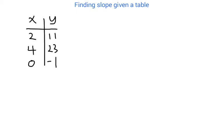By the way, ordered pairs, it's the same thing as coordinates. That's the location on the graph. So this would be over 2, up 11, over 4, up 23, or over 0, down 1.